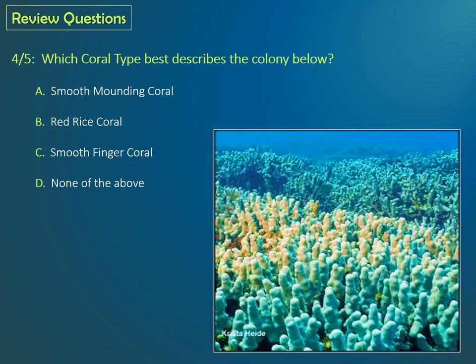Question four: Which coral type best describes this image? Is it A, smooth mounding coral? B, red rice coral? C, smooth finger coral? Or D, none of the above? If you said C, smooth finger coral, you're correct.